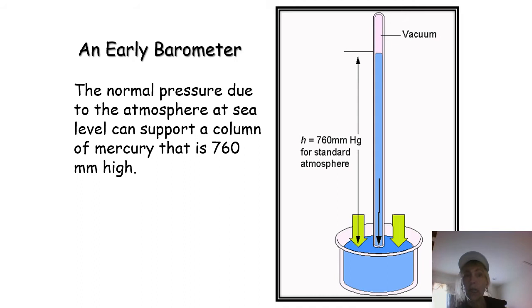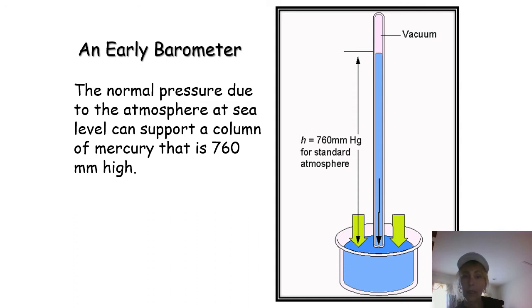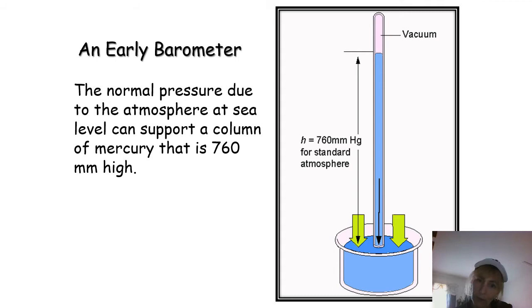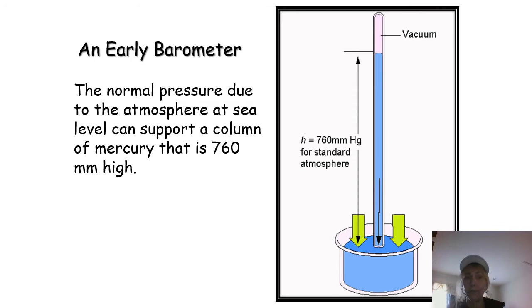What did that early barometer look like? It was pretty simple. All it consisted of was a small container of mercury — liquid mercury — and an inverted capillary tube about a little bit over a yard high. The weight of the atmosphere presses down on the mercury, and that causes the mercury to rise inside the capillary tube. Normal atmospheric pressure at sea level is 760 millimeters of mercury, which means the atmosphere pressing down can support a column of mercury 760 millimeters high.